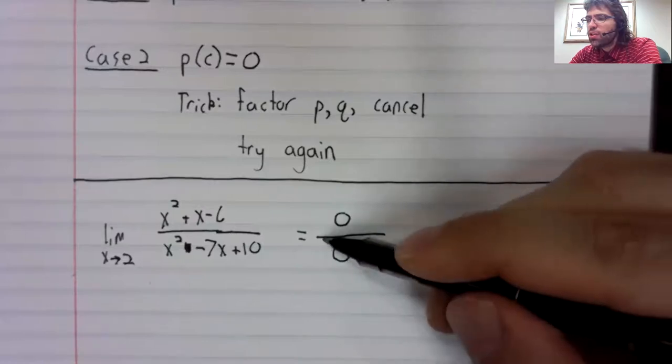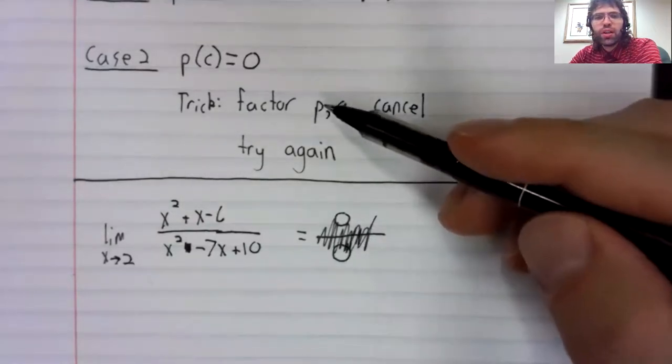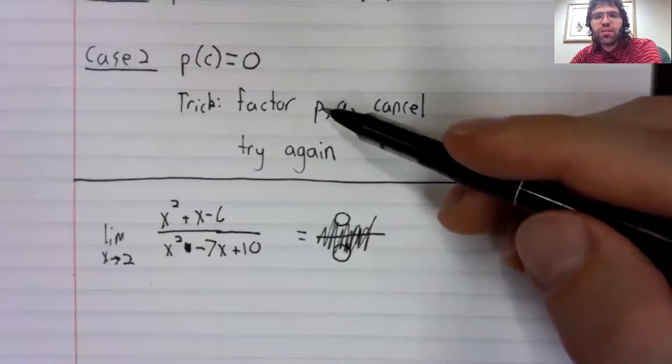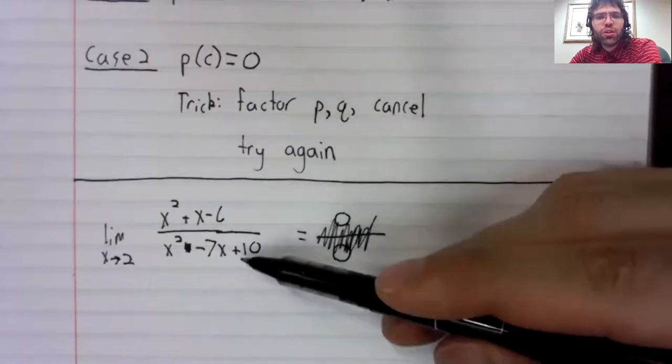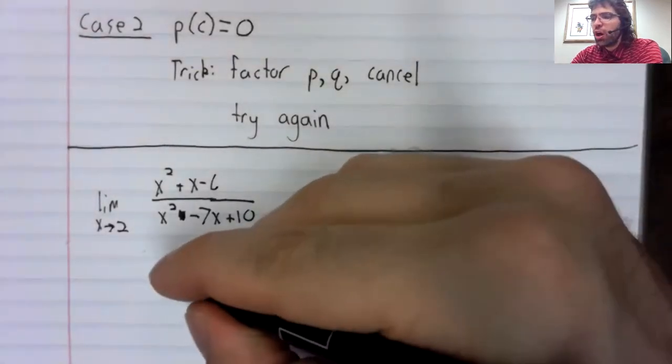So, what do we do? Now, according to this, if that happens, we should factor both numerator and denominator.